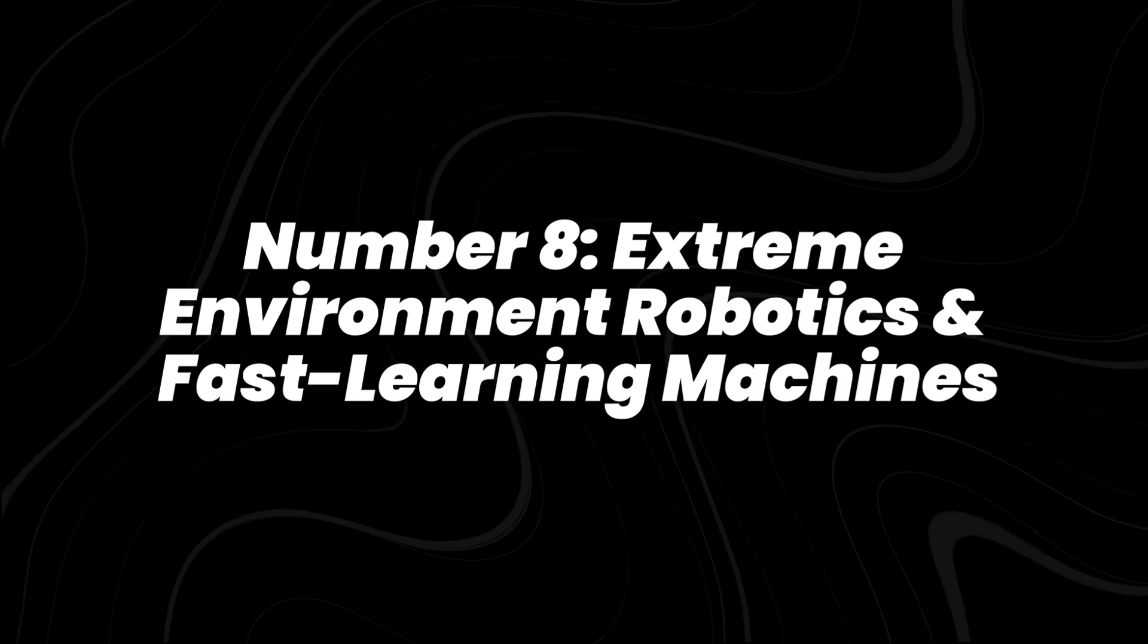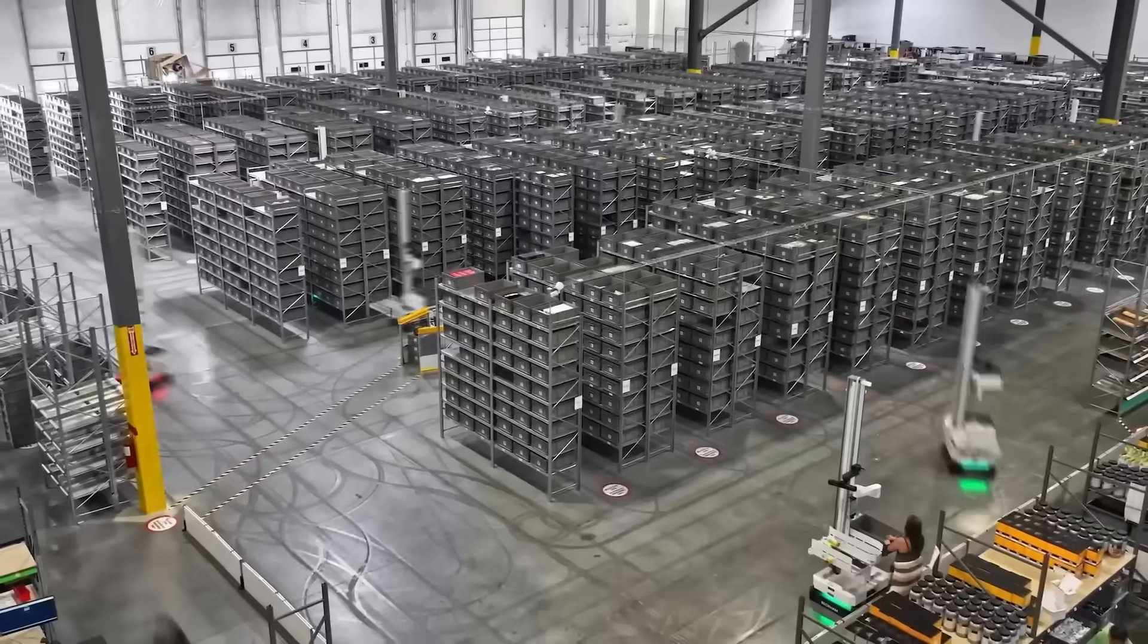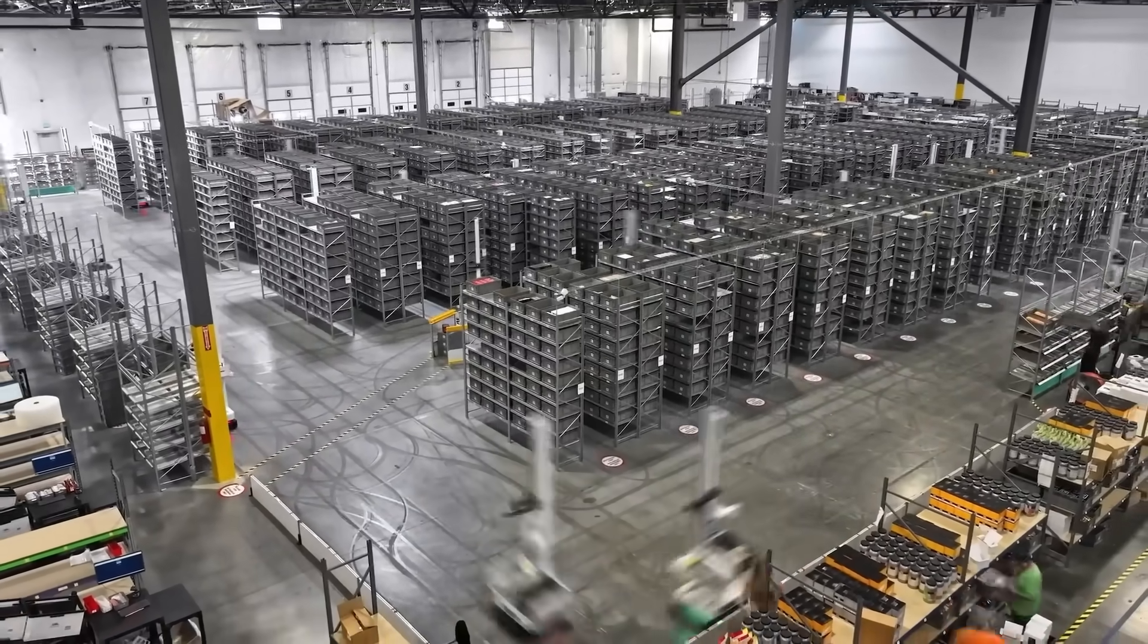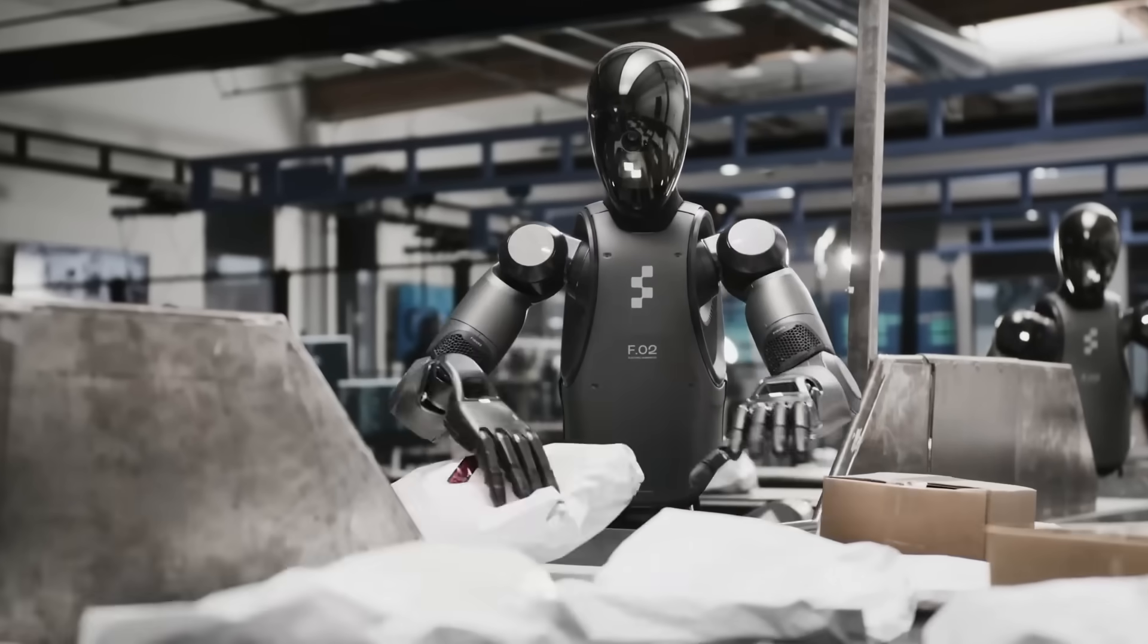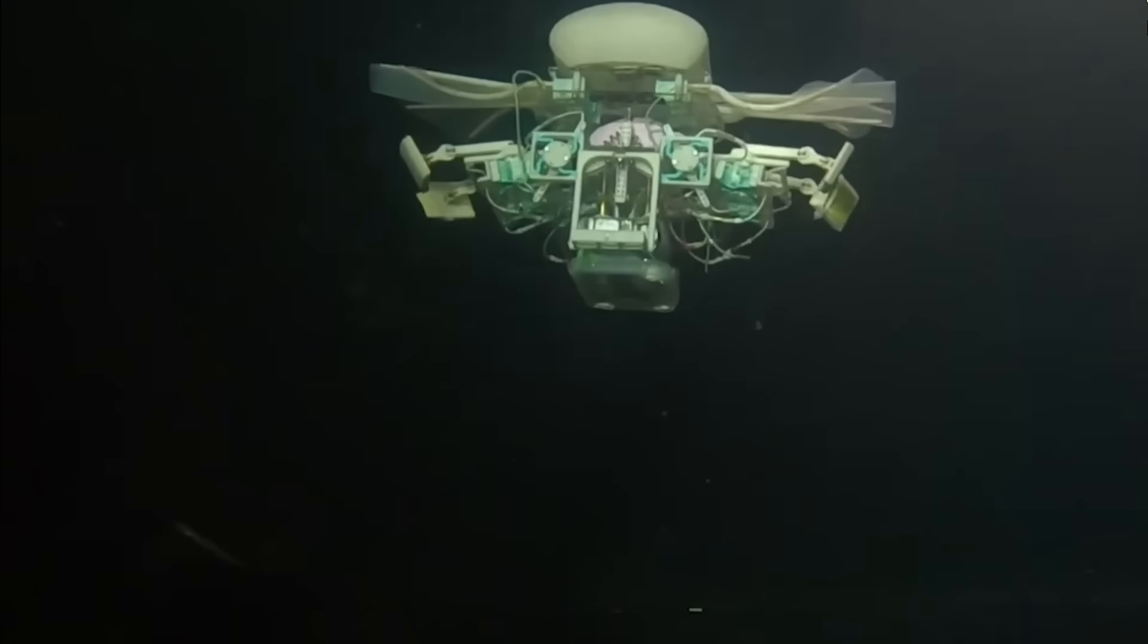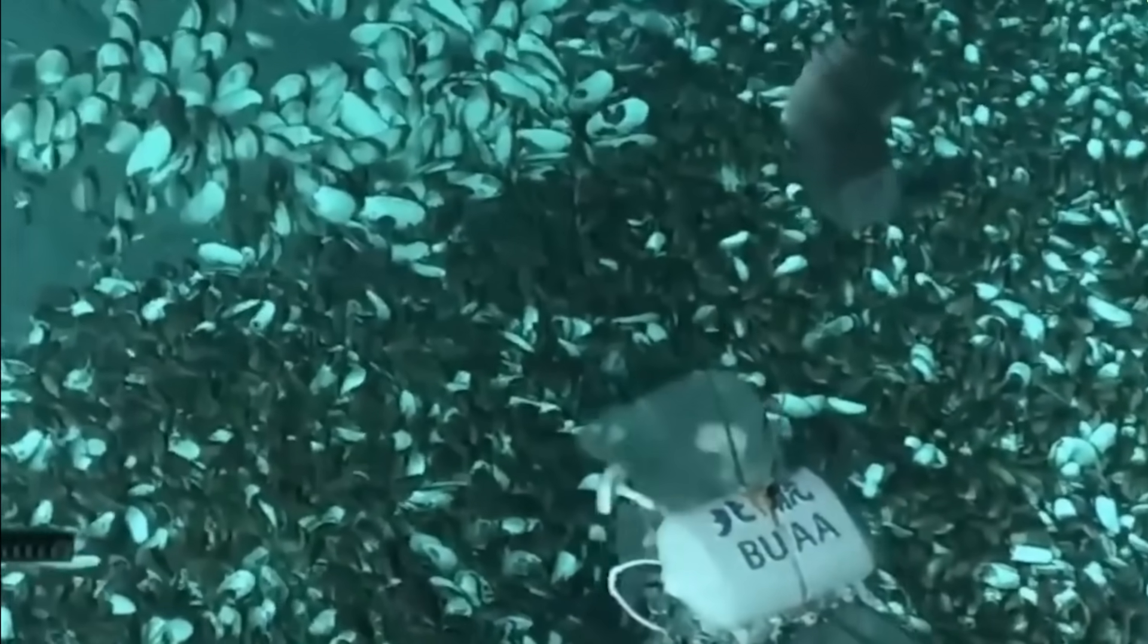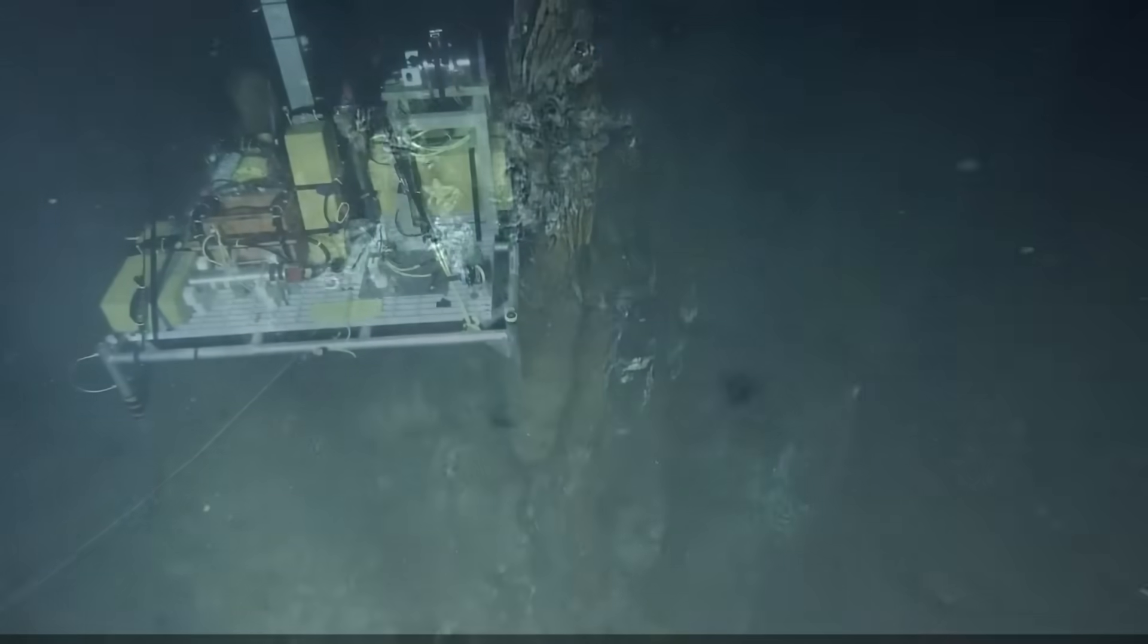Number 8, extreme environment robotics in fast learning machines. Robots are being built to master tasks in minutes rather than months. Using advanced reinforcement learning, they adapt quickly to new environments. Models like Figure Zero Two and Agility Robotics Digit are entering industrial trials, while deep-sea and nuclear-site robots undergo extreme condition testing. These machines operate where humans cannot, under high radiation, deep underwater, or in space.